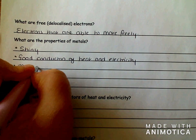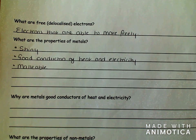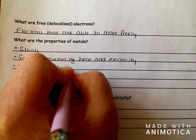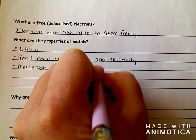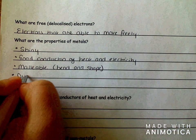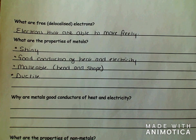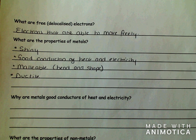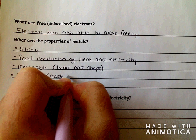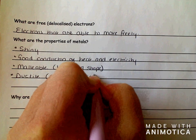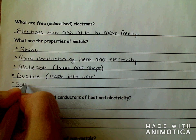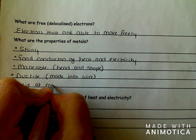Malleable. So malleable means to be able to bend and shape. So I'm going to put that in brackets. So it's bend and shape. Ductile. That means can be made into a wire, can be drawn out into a wire. So made into wire. And lastly, solid at room temperature.